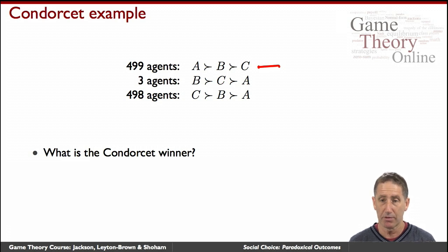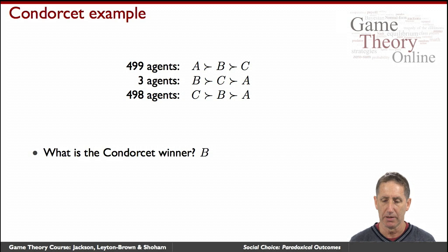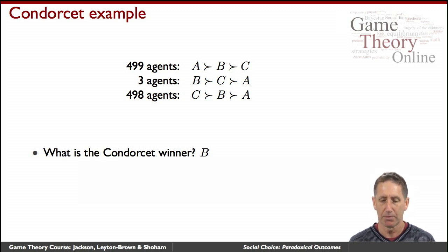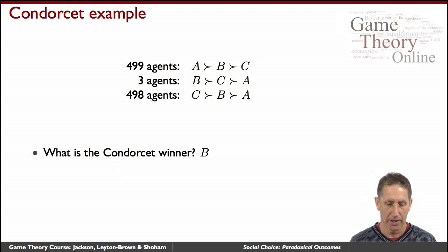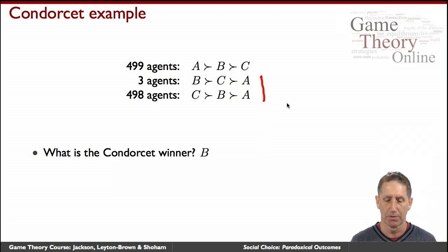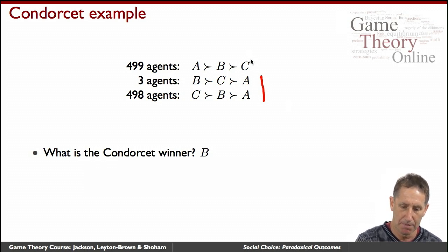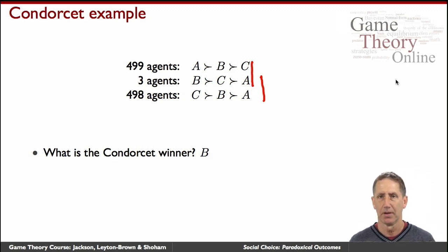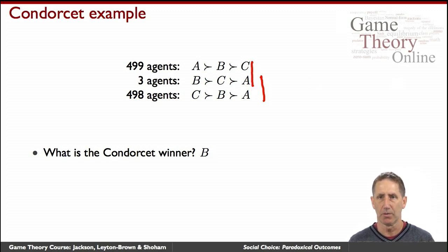The answer is yes — there is a Condorcet winner and it's B. Let's look at the relative preference of B to A and B to C. We have that 501 of the agents prefer B to A, and 502 of the agents prefer B to C. So clearly B is a Condorcet winner.